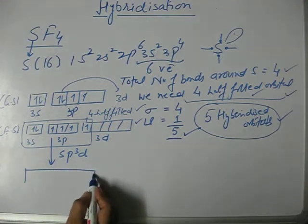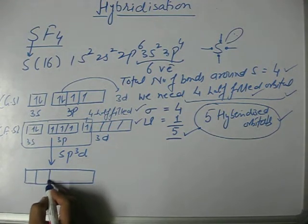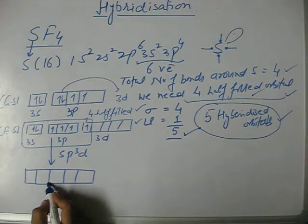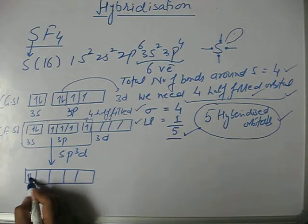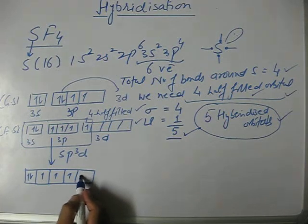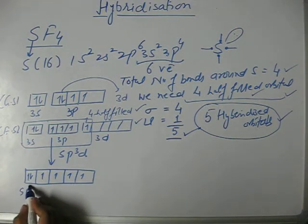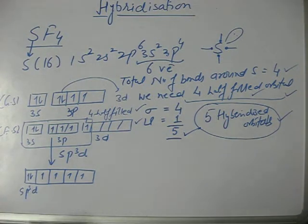This is one s, three p, and one d orbital involved in the hybridization—five atomic orbitals are mixing. Therefore we will get five orbitals, one which is fully filled and other four which are half-filled. All of them are same in energy and shape, that is sp3d.